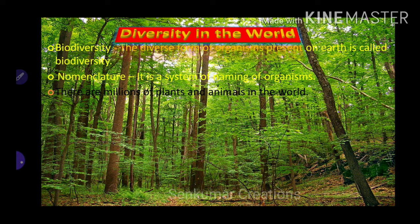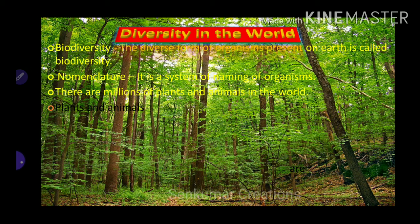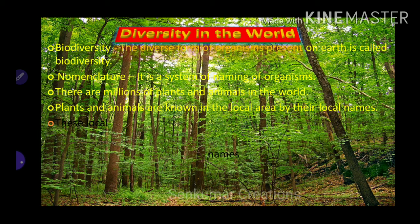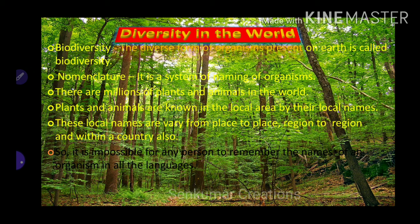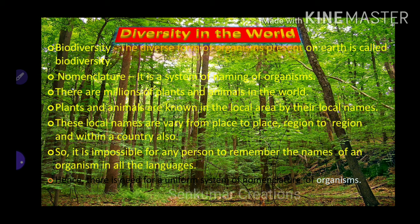Nomenclature is a system of naming organisms. There are millions of plants and animals in the world. Plants and animals are known by local names, but these local names vary from place to place, region to region, and country to country. So it is impossible for any person to remember the names of an organism in all languages. Hence there is a need for a uniform system of nomenclature.